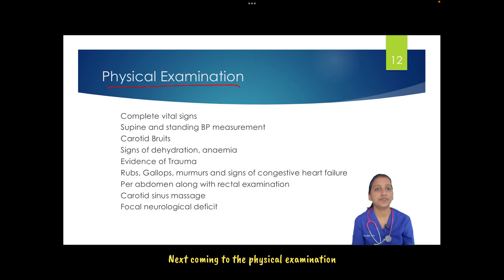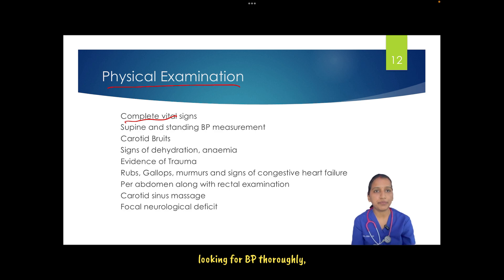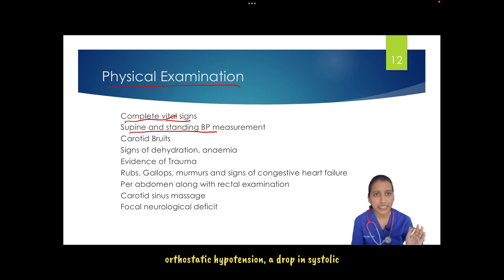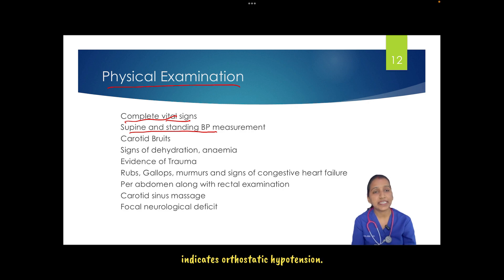Coming to physical examination while evaluating syncope: first, a complete set of vital signs is important — heart rate to look for tachycardia or bradycardia, blood pressure, oxygen saturation to rule out hypoxia, and temperature. Supine and standing blood pressure measurements must be taken to verify orthostatic hypotension. A drop in systolic BP of at least 20 mmHg, diastolic BP of at least 10 mmHg, or systolic BP below 90 mmHg while standing indicates orthostatic hypotension.